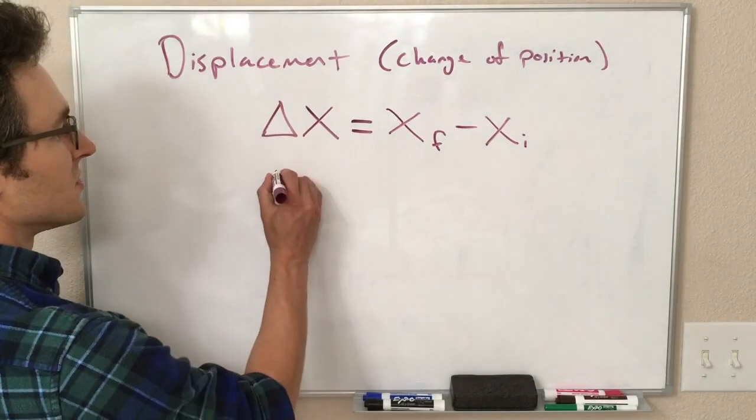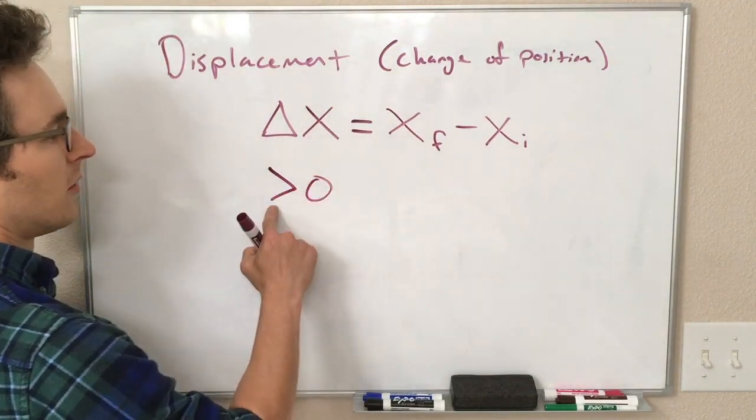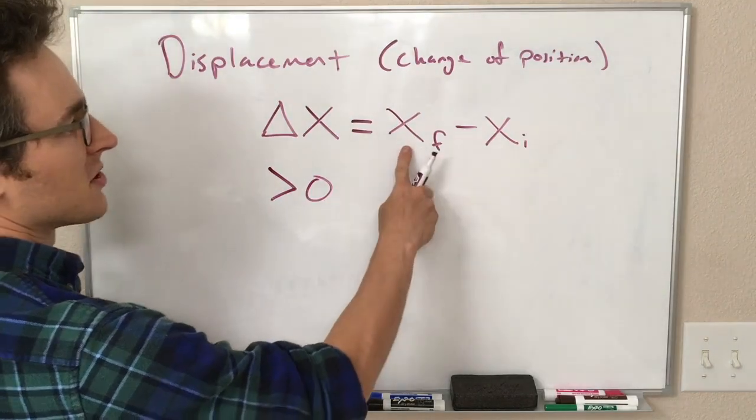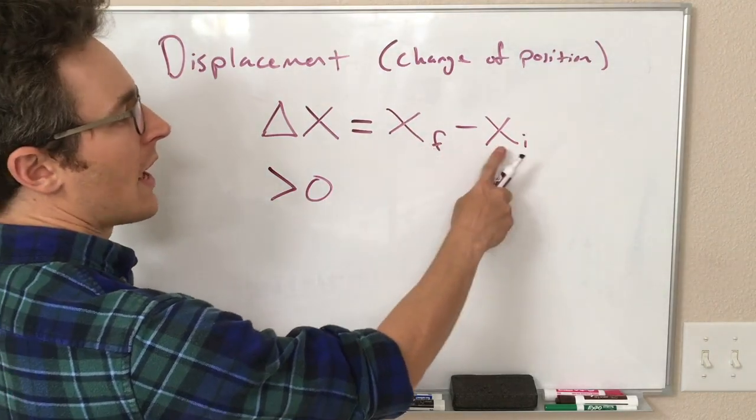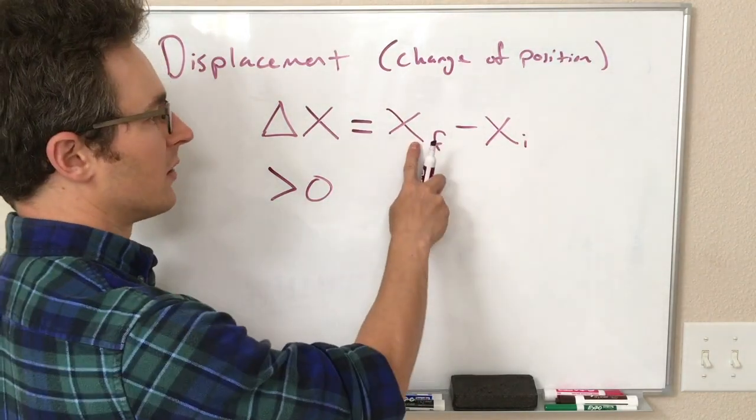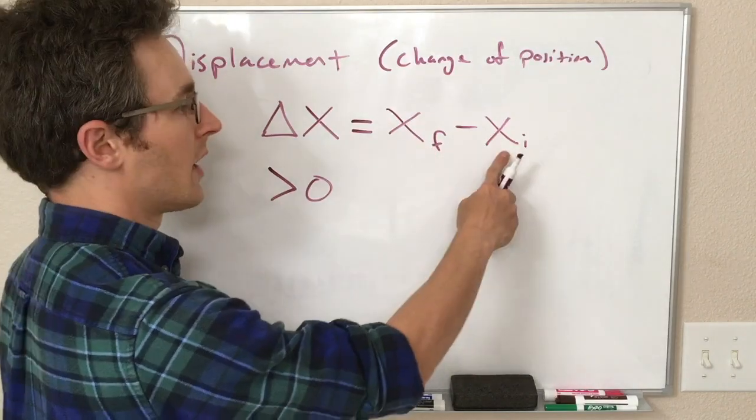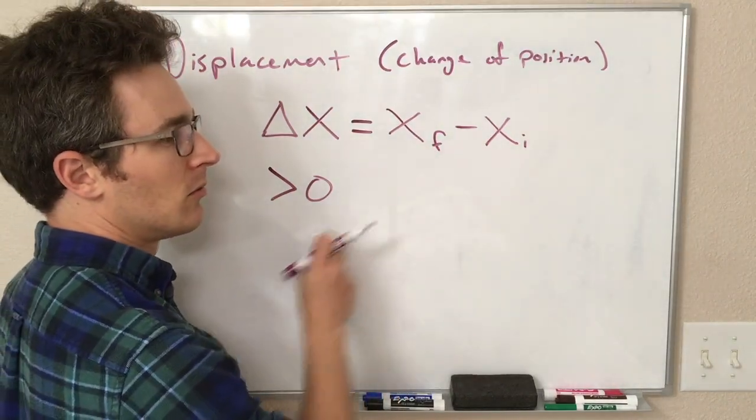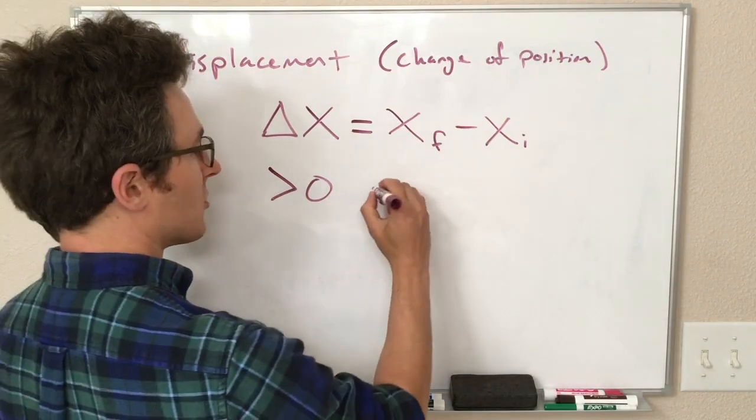So if our displacement is positive, greater than zero, that means x final is bigger than x initial, or really it's x final is more positive than x initial, and so our object ended up to the right of where it started.